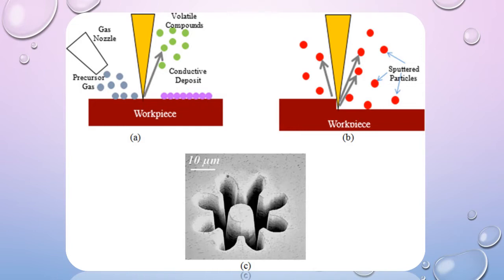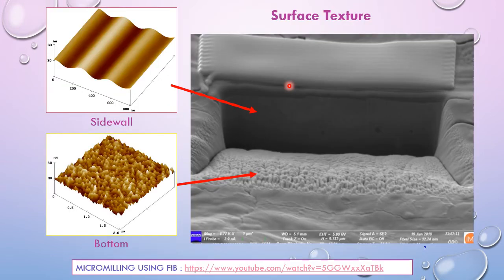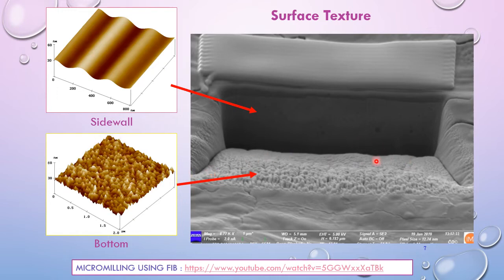Here is an example of how FIB works and what the final product looks like. This is an example of a product produced via the FIB process. The surface texture for a product produced via FIB — for instance, a material that undergoes micro milling — will show that the side wall has a texture smoother compared to the bottom area. The bottom surface looks rougher because the ions bombard from the top, creating a wave-like pattern on the side wall.